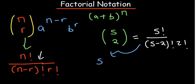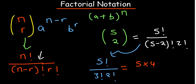So working through five choose two: on top we have five factorial, and five minus two factorial is the same as three factorial, then times two factorial. Five factorial is five times four times three factorial — and since three factorial appears on the bottom as well, those cancel out. We're left with five times four over two factorial, which is two times one.